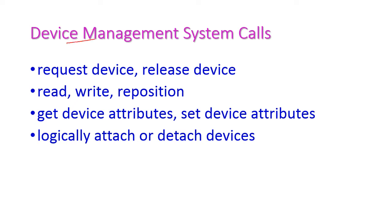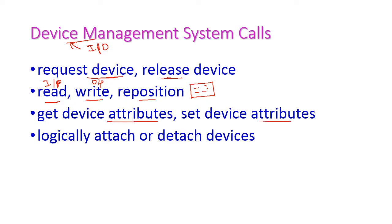The third category is device management system calls. Here, a device refers to input and output devices. When executing a process, it may request devices — for that we use the request device system call, and for releasing we use the release device system call. For reading, through an input device we can read the data, and through an output device we can write the data — these are the read and write system calls. Reposition means we can reposition the content on the screen, which is the output device. We also have get device attribute and set device attribute system calls for getting and setting the attributes of devices.